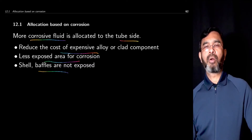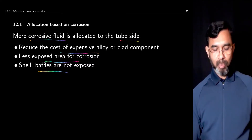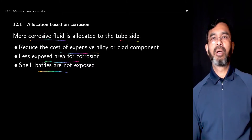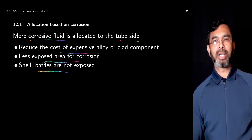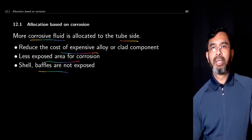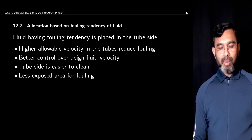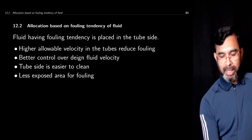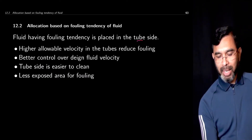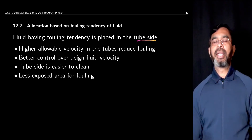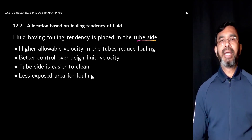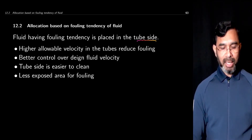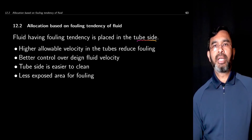If you put the corrosive fluid on the shell side, the outer side of the tubes is also exposed, so the tubes are exposed in either way. Regarding fouling tendency, fluid having a fouling tendency is placed on the tube side. Inside the tube it is easier to clean and there is less area of exposure.